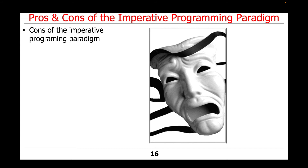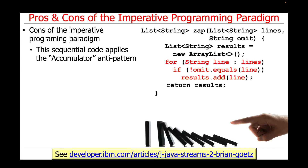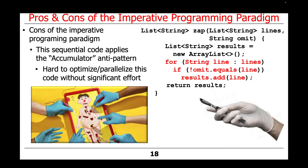However, not everything is unicorns and rainbows. There are some downsides with the imperative programming approach. One big problem, described in the link at the bottom of this slide, is that the sequential code shown here applies what's known as the accumulator anti-pattern. In a nutshell, using this approach makes it hard to optimize and specifically parallelize this code without significant effort, because we've tightly coupled the loop, the if statement, and the adding of lines to results with sequential accumulation. Making this run concurrently or in parallel would require a lot of surgery.